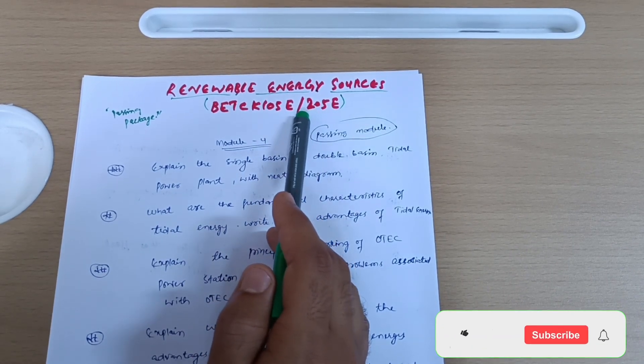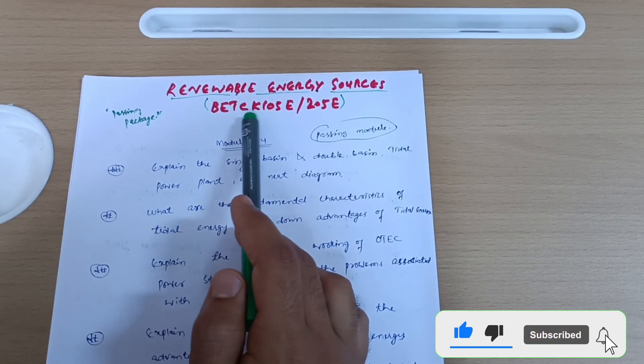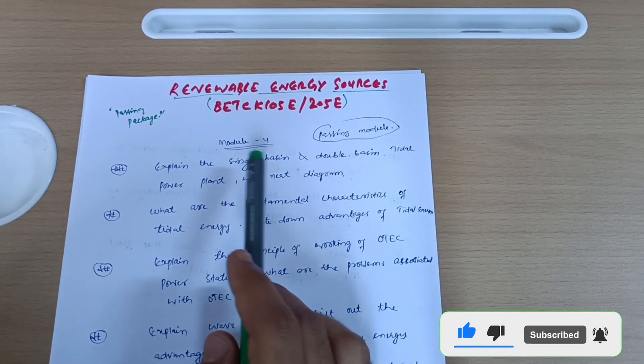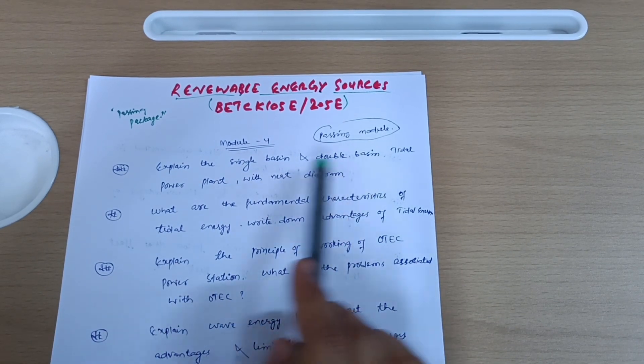Currently writing so the code is 205E, and if somebody is having backlog they can also refer this passing package. Let us start with Module 4 passing module: explain the single basin and double basin tidal power plant with neat diagram.